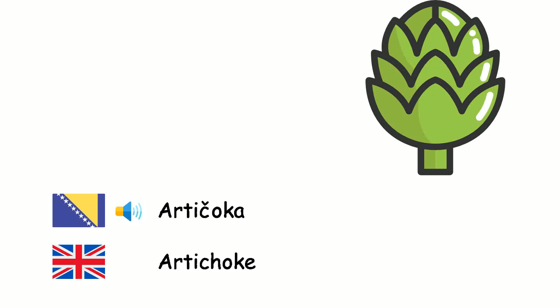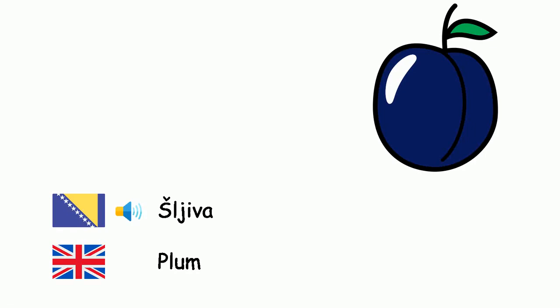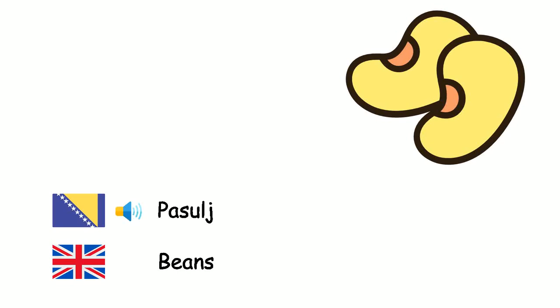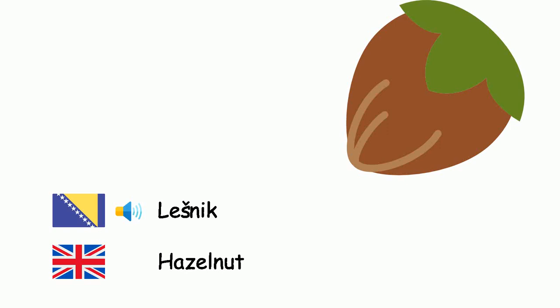Artičoka. Šljiva. Meso. Pasulj. Lješnik. — Artichoke. Plum. Meat. Beans. Hazelnut.